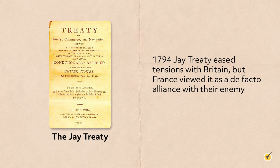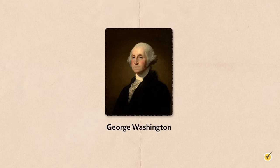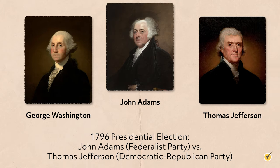However, the treaty was unpopular both at home, for it granted concessions to the British, and abroad, as the French viewed it as a de facto alliance with their enemy. Amid this diplomatic crisis, the United States held the first contested presidential election in 1796. George Washington was unopposed in his two terms. The race to succeed him was between Vice President John Adams and Thomas Jefferson, former Secretary of State.